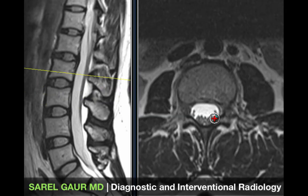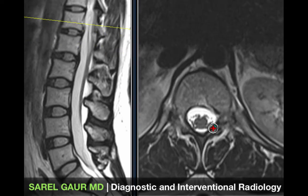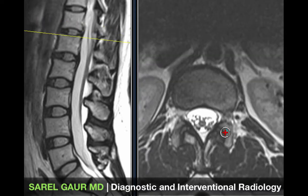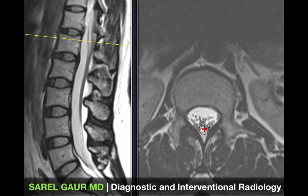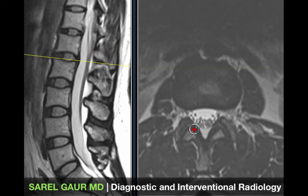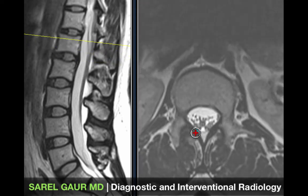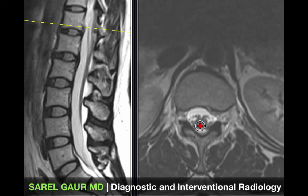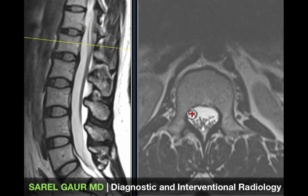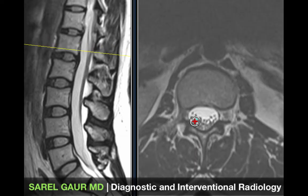Scrolling up, you can see how the spinal cord goes from being a solid mass and turns into individual nerve roots as you come down lower. This is the conus of the spinal cord going into the cauda equina. Cauda equina is Latin for the horse's tail, which you can see from all these individual small nerve roots floating in the CSF.